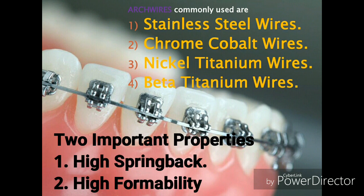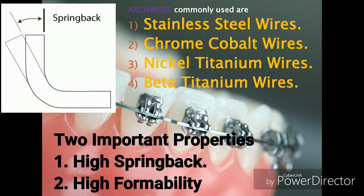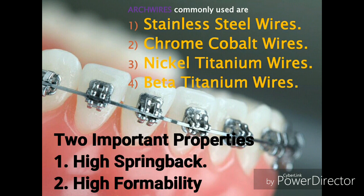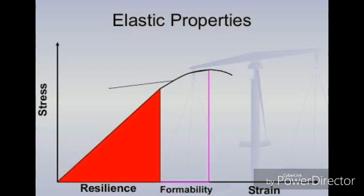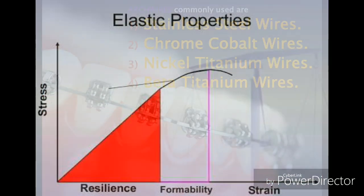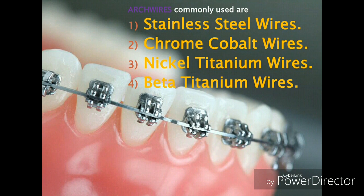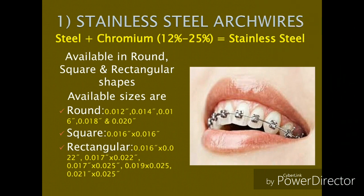Ideally, an arch wire must have a large spring back property — that is, it should be possible for the wire to be deflected over a long distance without permanent deformation. This means that a clinician is assured a large range of movement with minimal adjustments. Secondly, the wire should have high formability — it should be capable of being easily shaped, bent, or transformed into complicated configurations like loops and helices without fracturing.